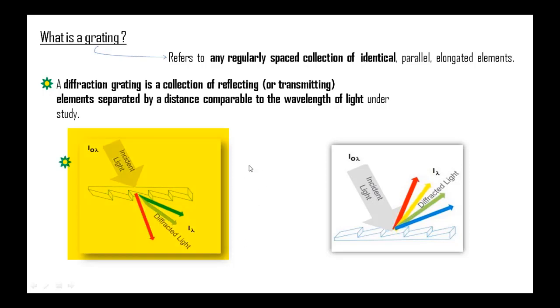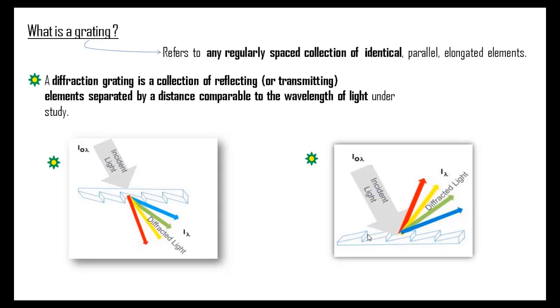There are two major types of diffraction gratings that can be found in most labs. A transmission grating, in which the incident and the diffracted rays lie on the opposite sides of the grating. And second is a reflection grating, in which the incident and the diffracted rays lie on the same side of the grating. A reflection grating is basically a transmission grating followed by a reflecting surface.